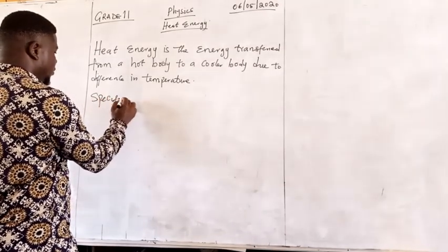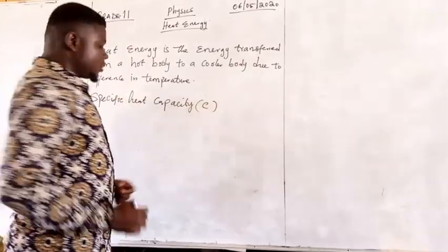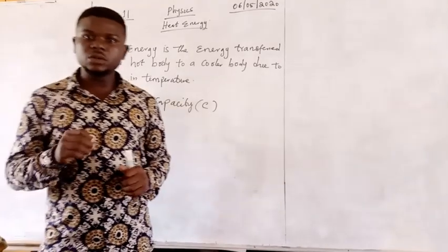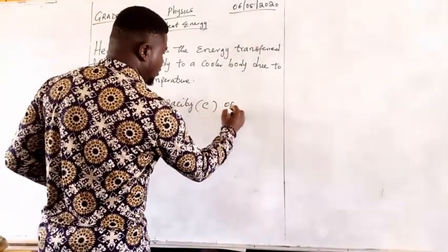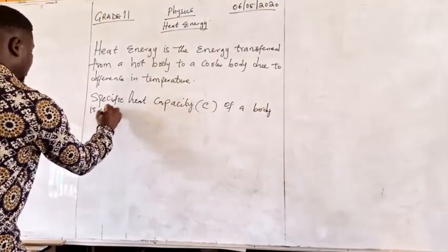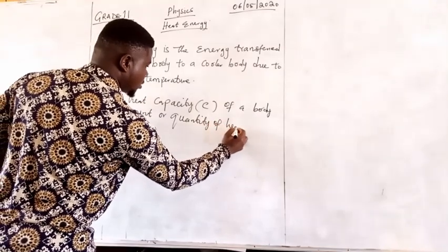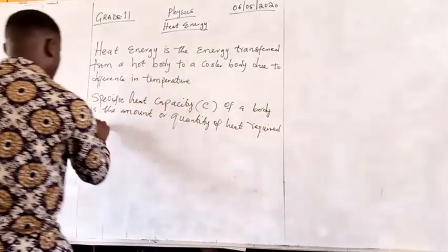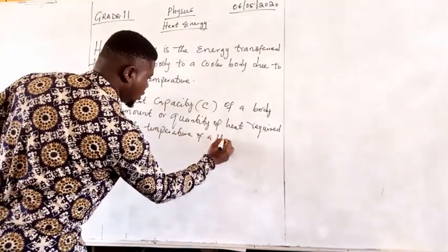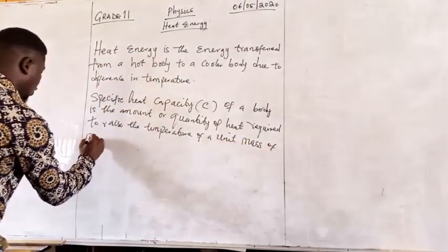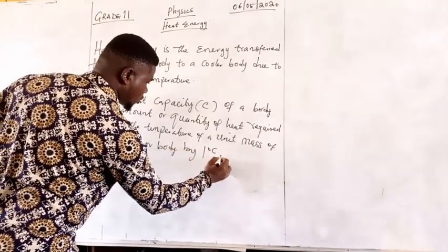Specific heat capacity is denoted as C. It is the quantity or amount of energy required to raise the unit temperature of a body by one degree Celsius or one Kelvin. The capacity C of a body is the amount or quantity of heat required to raise the temperature of a unit mass of a substance or body by one degree Celsius or one Kelvin.